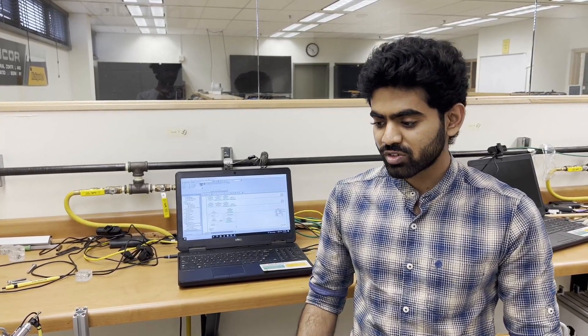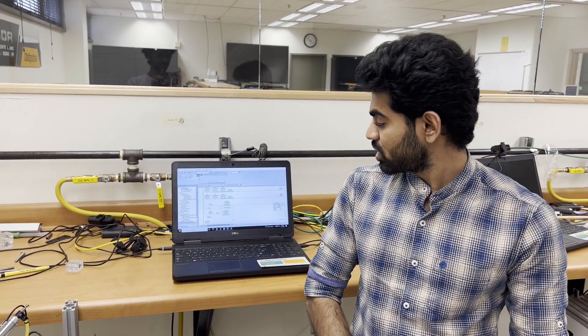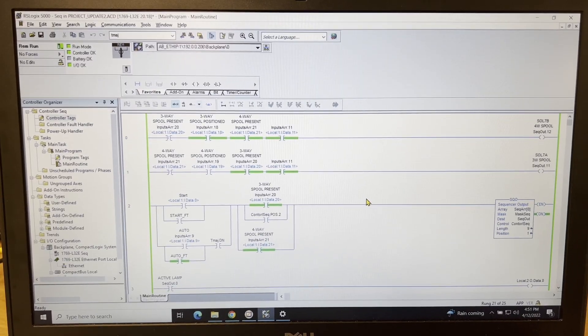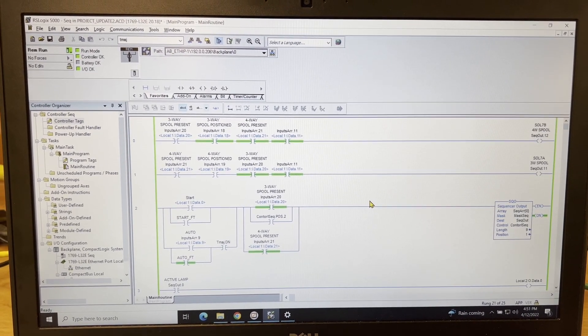We are using two softwares for this project. One is RSLogix 5000 and Factory Talk View Studio. So initially RSLogix software is used to download this ladder logic into the PLC.